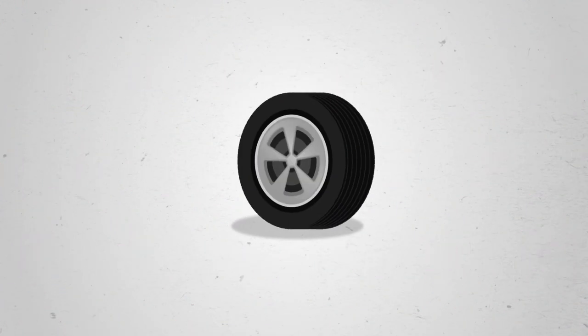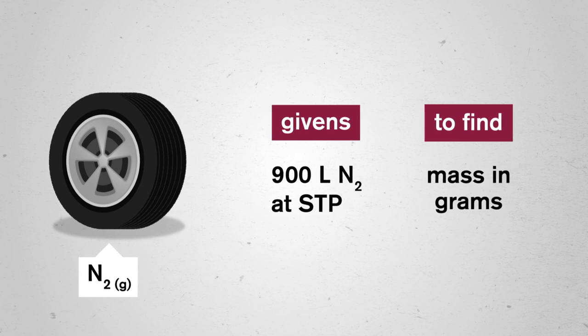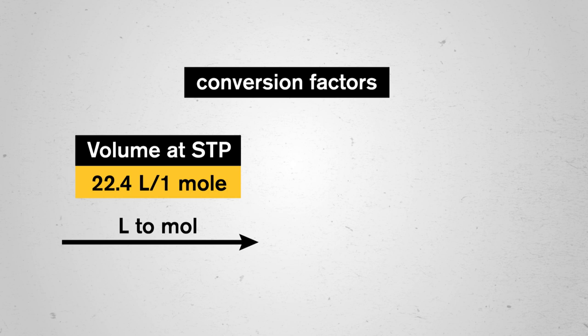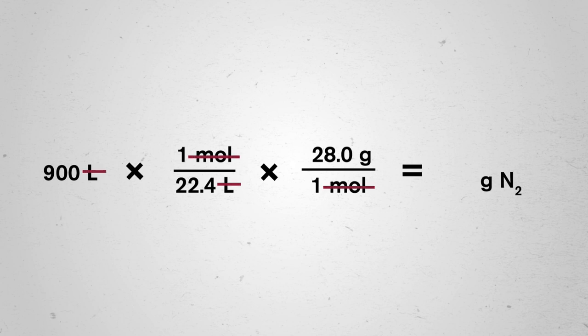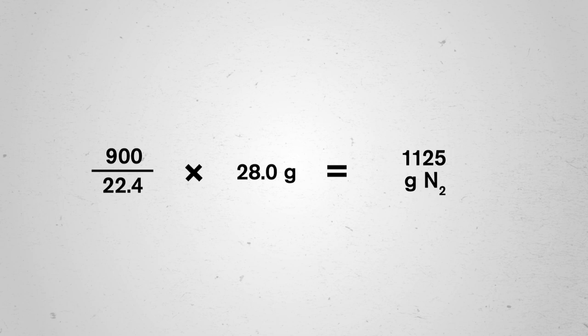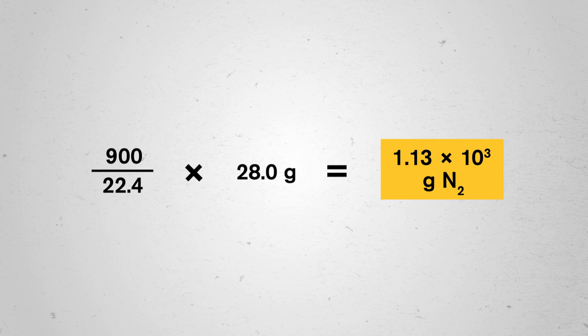Now we can apply STP and the standard gas volume to other kinds of multi-step mole calculations dealing with gaseous substances. For example, let's find the mass in grams of 900 liters of diatomic nitrogen at STP. We can use the standard gas volume as our conversion factor. Since it's expressed as liters per mole, it will get us from units of volume to units of moles. To get from moles to grams, we use the molar mass of diatomic nitrogen, 28 grams per mole. So we have 900 liters of N2 multiplied by one mole of N2 over 22.4 liters, then multiplied by 28 grams per mole. Our liters and moles cancel, leaving us grams. Rounded to three sig figs, that's 1.13 times 10 to the third grams as our final answer.